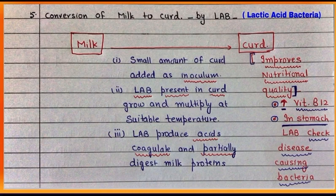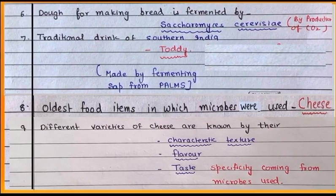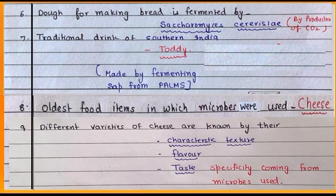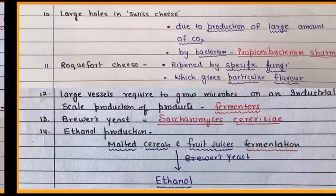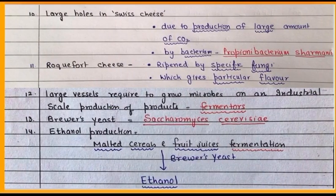We can prepare bread, drinks, and different types of cheese with the help of microbes. From fermentation of malted cereals and fruit juices, we can get ethanol.